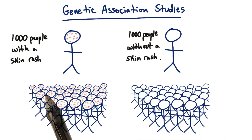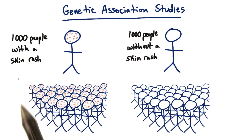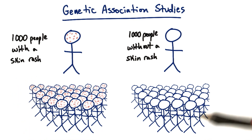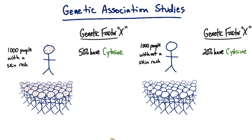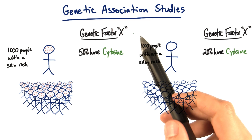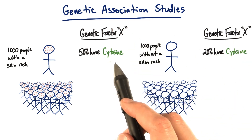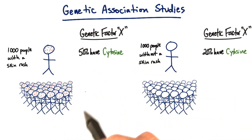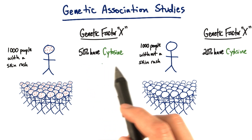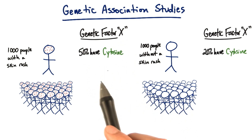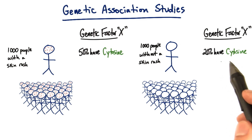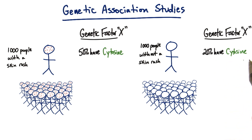Suppose that we have a thousand people that have a particular kind of skin rash, and we compare them to a thousand people that don't have this particular kind of skin rash. We analyze these two populations for one particular genetic factor, and we determine that 50% of the population with the skin rash has a cytosine for this genetic factor at a given position, while in the control population only 20% have a cytosine.